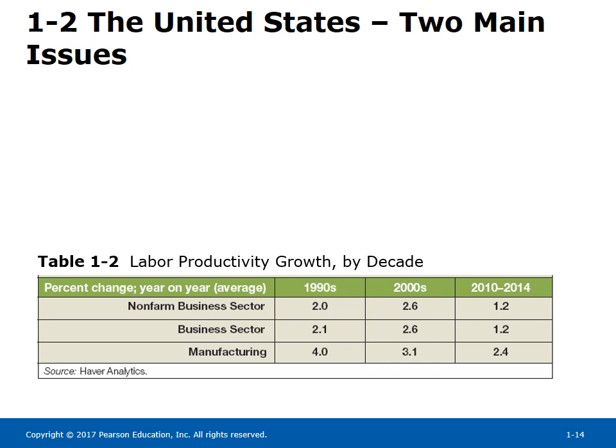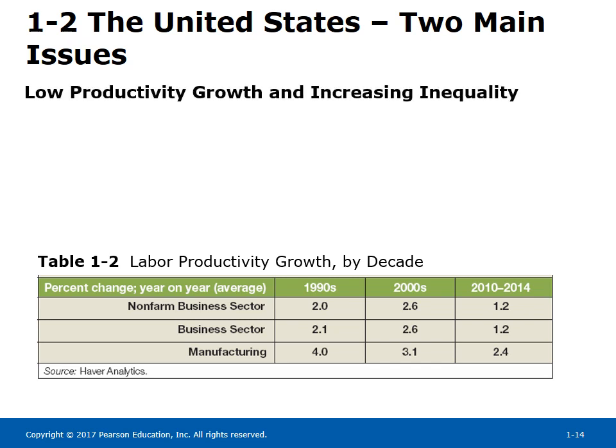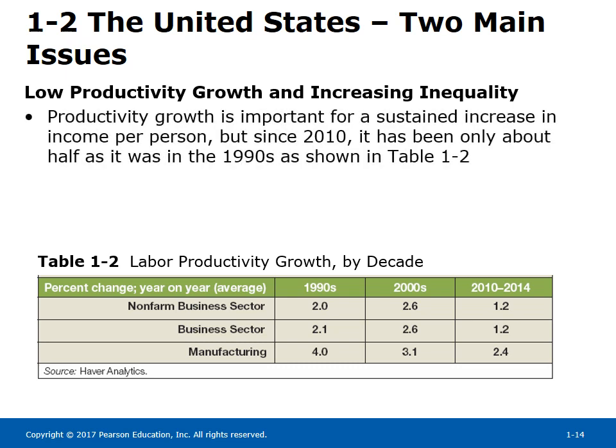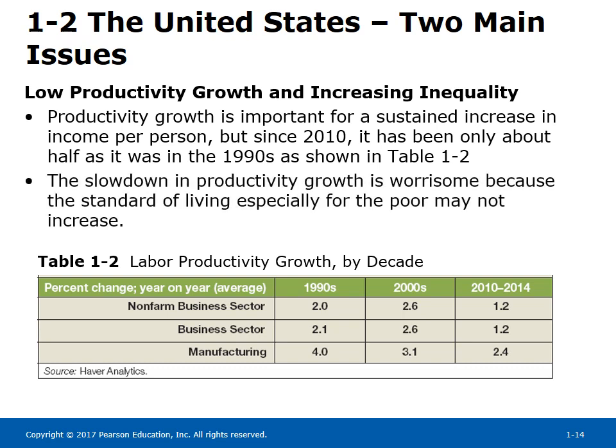Although aggregate demand is important in determining the level of output in the short run, economic growth and the standard of living in the long run depend on productivity growth. Two main issues facing the United States today are low productivity growth and increasing inequality. Productivity growth is important for a sustained increase in income per person, but since 2010 it has been only about half of what it was in the 1990s, as shown in Table 1-2. The slowdown in productivity growth is worrisome because the standard of living, especially for the poor, may not increase, leading to increasing inequality.